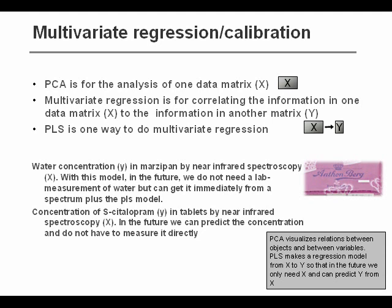For example, in producing marzipan, it's very important that you have the right water concentration in various steps of the process. You cannot do a classical water determination online. That is time-consuming and will not work in practice. But if you could measure a near-infrared spectrum and then predict the water concentration from that spectrum, then you would be able to implement an online system ensuring that the process was running smoothly.